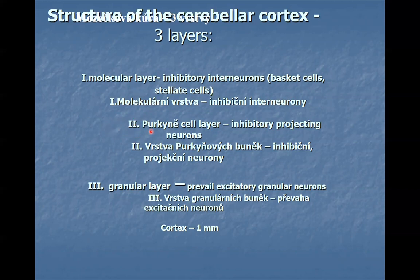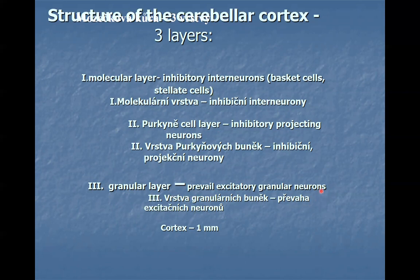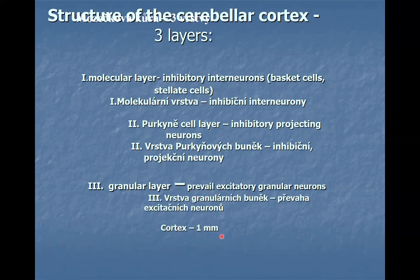The second layer is the Purkinje cell layer. Purkinje cells are inhibitory, GABAergic cells, and they project to the cerebellar nuclei. The third layer is thick and named the granular layer, which contains excitatory granular neurons using glutamate as their neurotransmitter. The third layer also contains a smaller number of inhibitory neurons. The thickness of the cortex is about one millimeter.